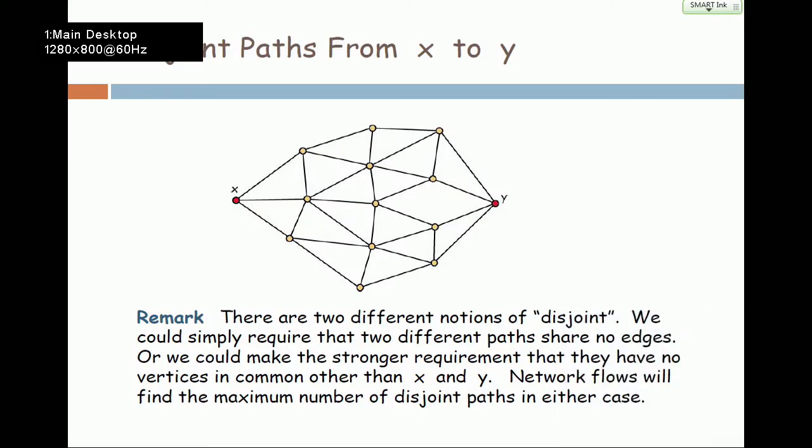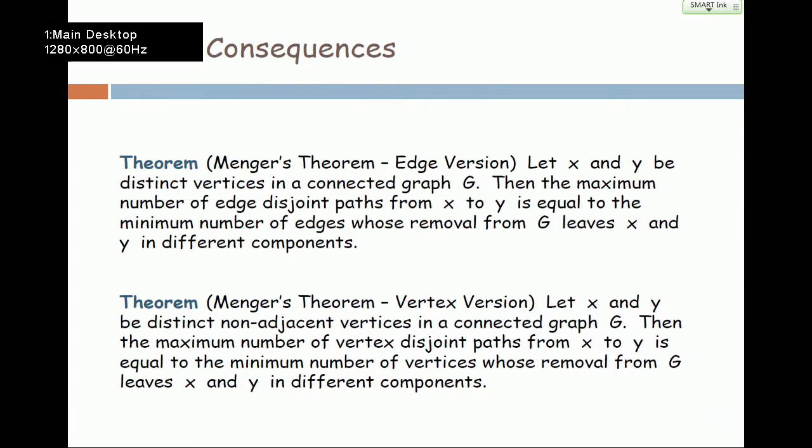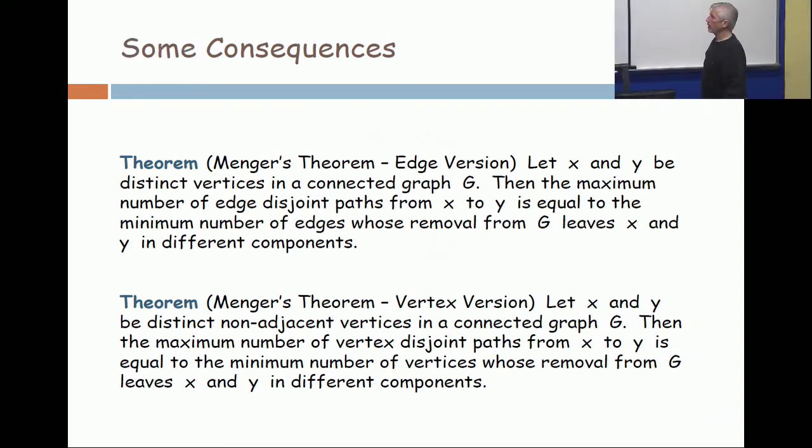There are a couple of interesting graph theory results which are due to a German graph theorist many years ago, Kurt Menger. This says in the edge version, if you take two distinct vertices in a connected graph, the maximum number of edge disjoint paths from X to Y is equal to the minimum number of edges whose removal from G leaves X and Y in different components.